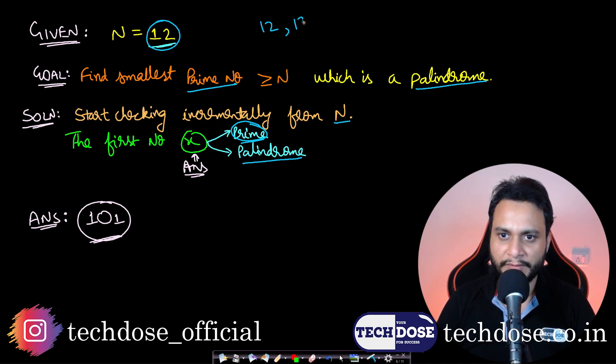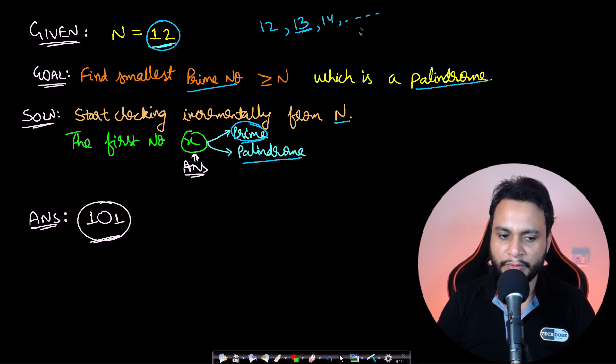If we start checking from 12, 13 is a prime but it's not a palindrome. If you keep going, we'll find that 101 is the first number we encounter which is prime as well as a palindrome.